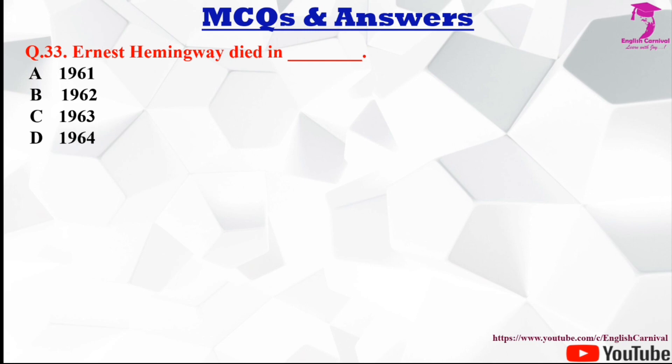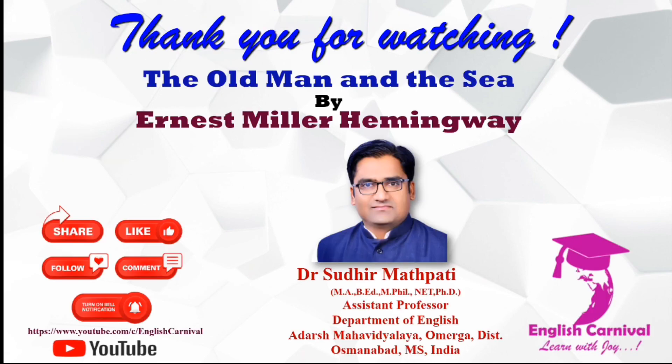Question number thirty-three: Ernest Hemingway died in dash. Options are A 1961, B 1962, C 1963, and D 1964. The correct answer is A, he died in 1961.